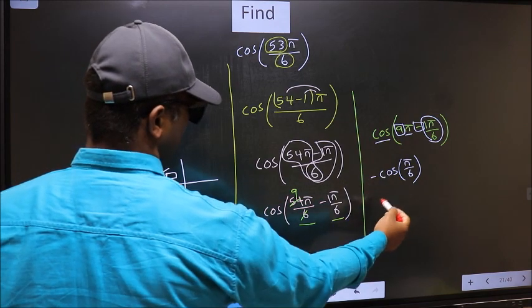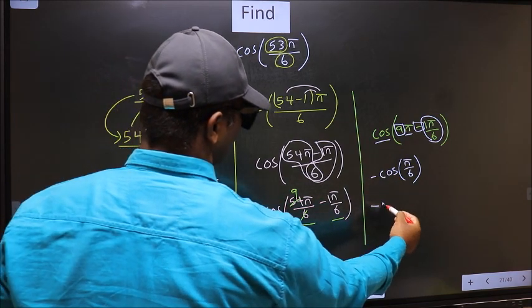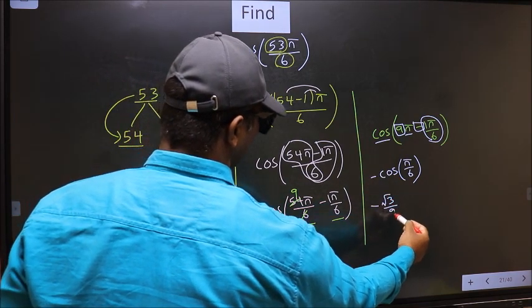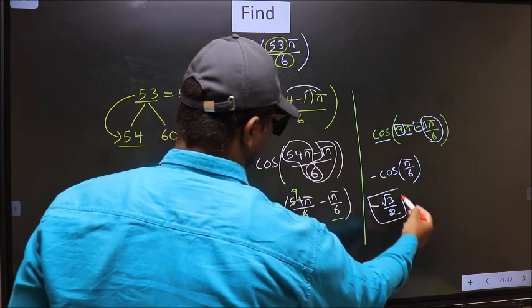So we should put negative. So negative cos π/6 is root 3 by 2. This is our answer.